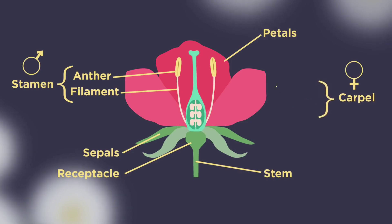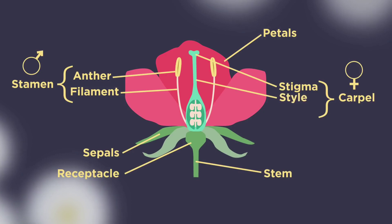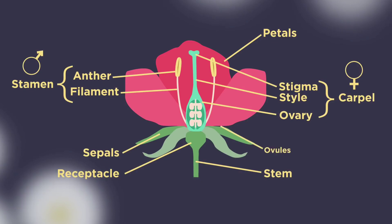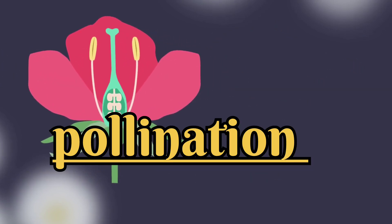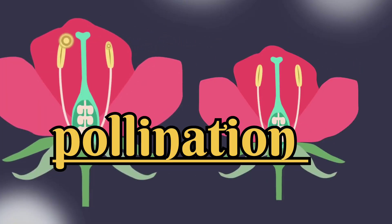The pistil consists of a stigma, style, and ovary. The stigma is a sticky landing surface for pollen, the style is the pathway for pollen grains to travel, and the ovary is the area where the female gametes — the sex cells — are located. Ovaries produce female gametes.